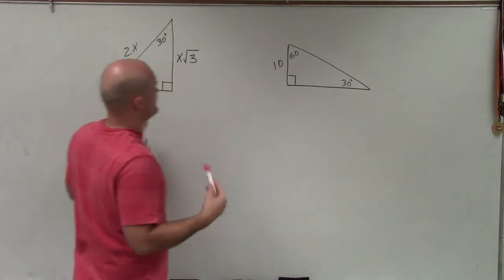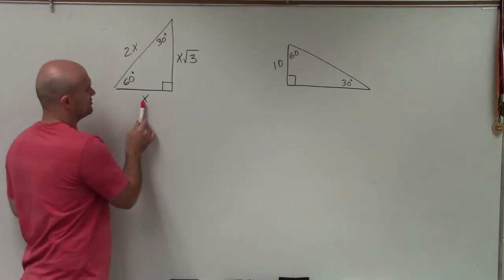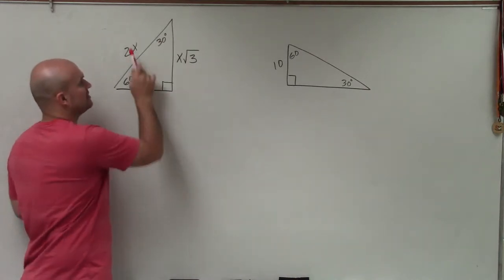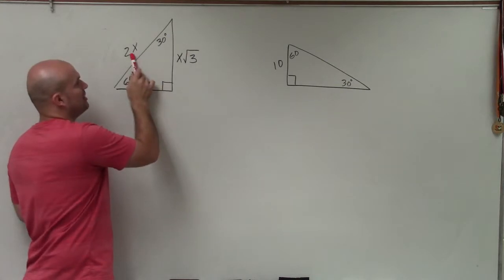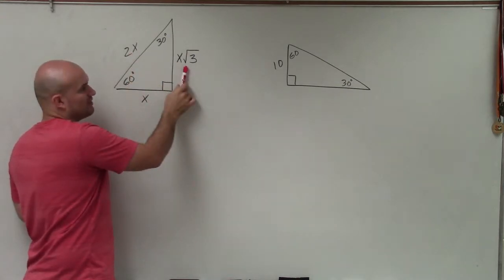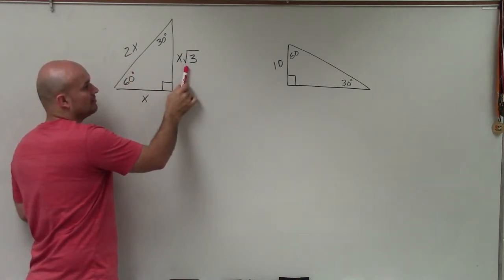I always like to relate to the short leg because it's just represented by itself. From the short leg, I multiply by 2 to get the hypotenuse and multiply by square root of 3 to get the long leg.